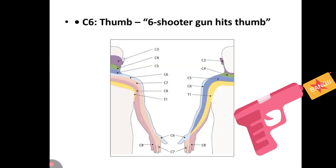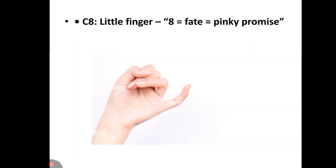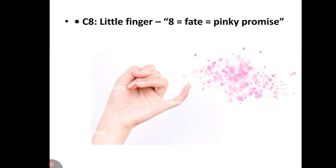C6 — remember it with the six-shooter gun that hits the thumb. It's the thumb area — the C6 dermatome. C7 is the middle finger area — seven in the center. C8 is the little finger — eight, pinky promise.